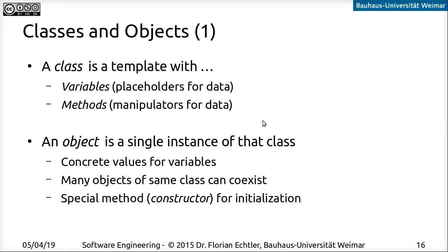So first of all, what's a class? A class is basically just a template, and inside that template we have variables which are placeholders for the data, and we have methods which manipulate that data. From that class template we can then build an object, which is a single instance of that template — meaning each of the variables now has actual concrete values.